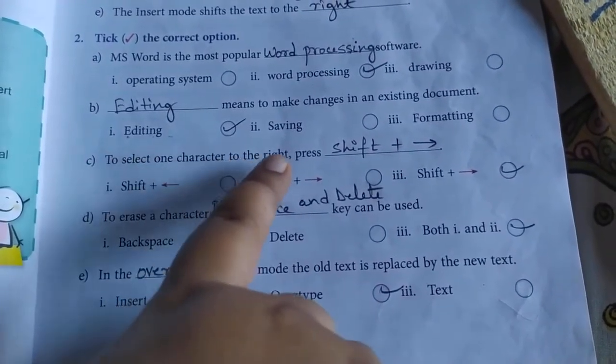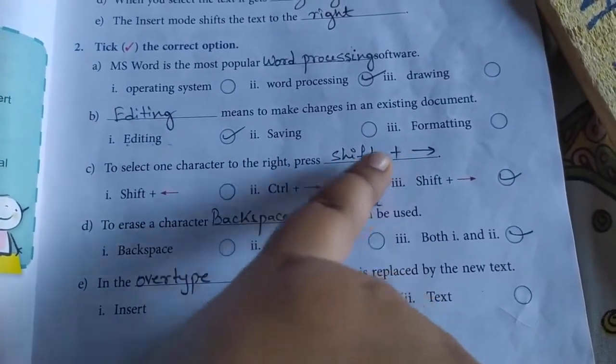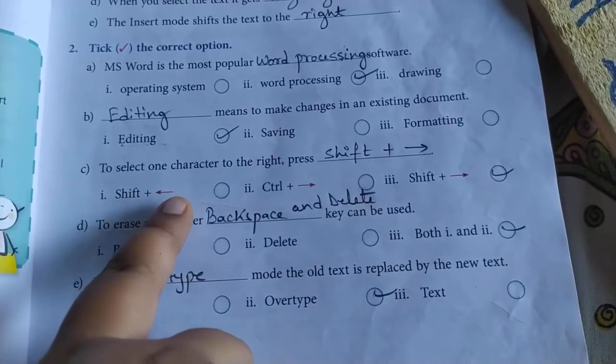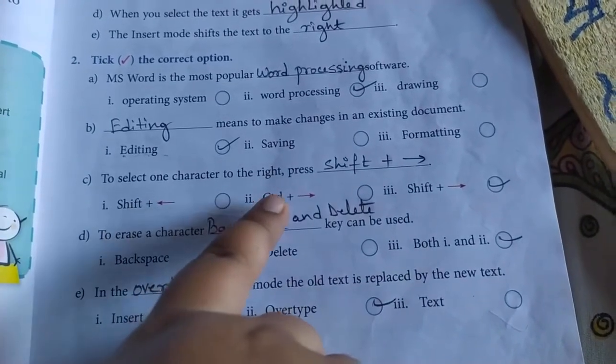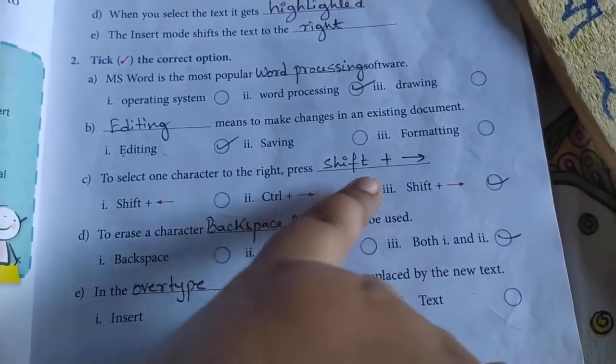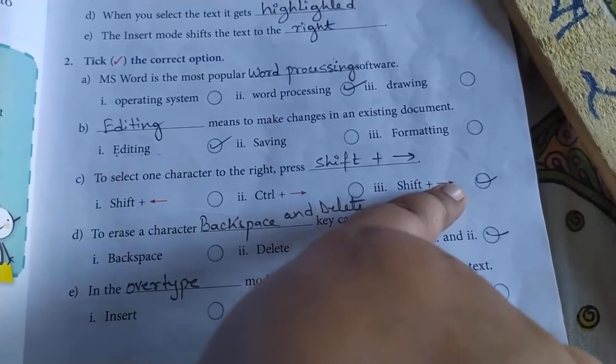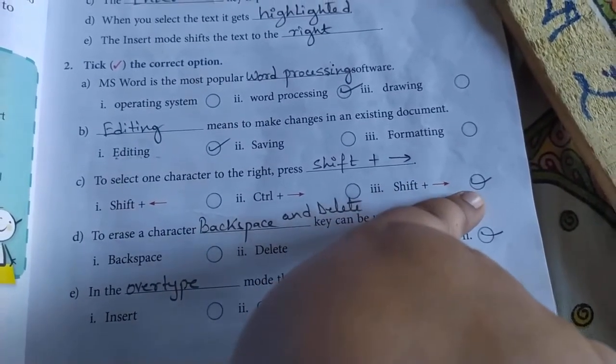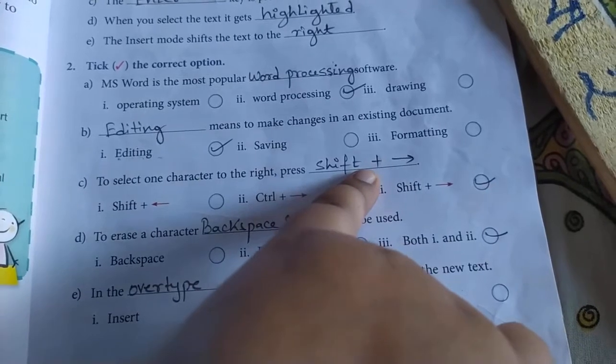To select one character to the right, press blank. Options: Shift plus left arrow, Control plus right arrow, Shift plus right arrow. Shift plus right arrow is the correct answer. Give a tick and write the answer over here.